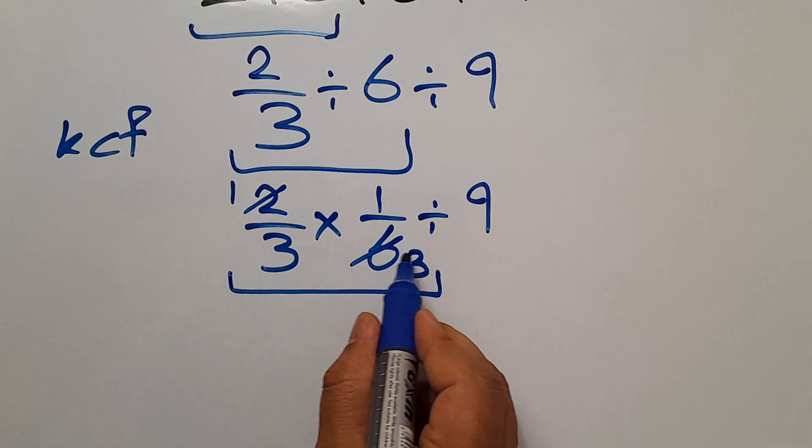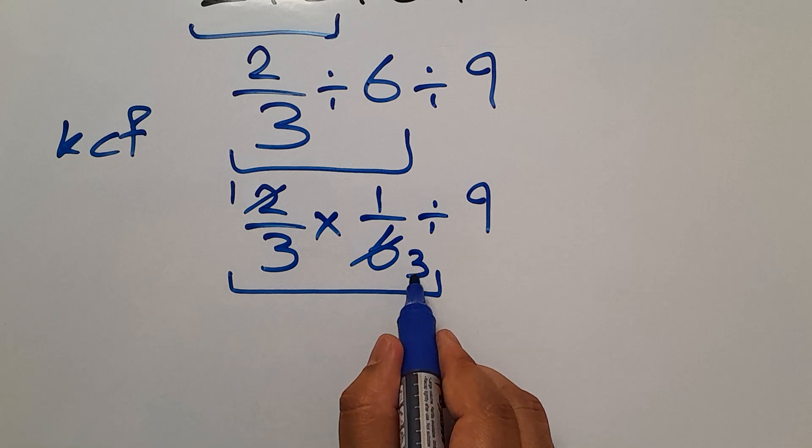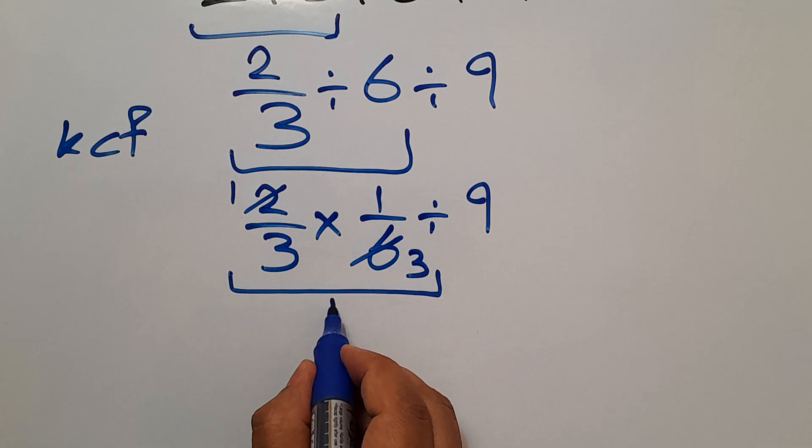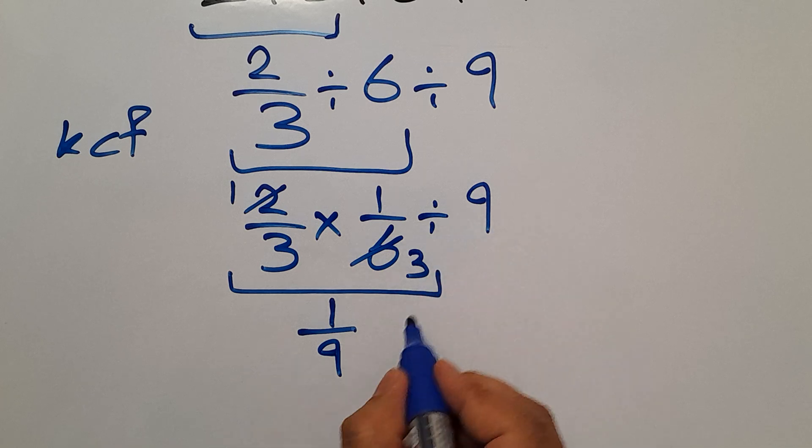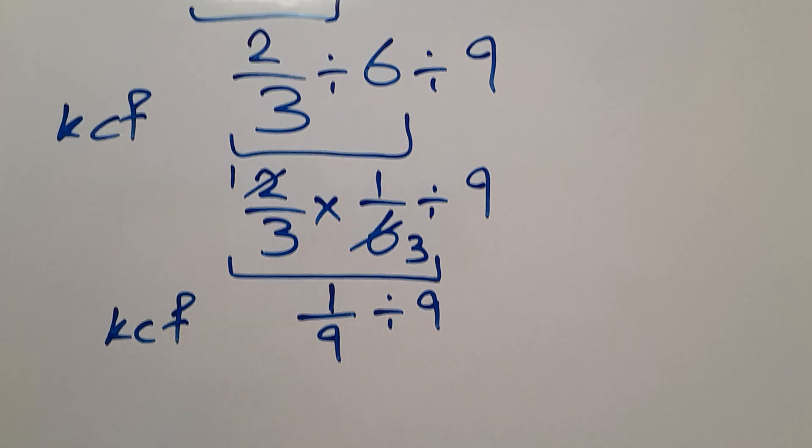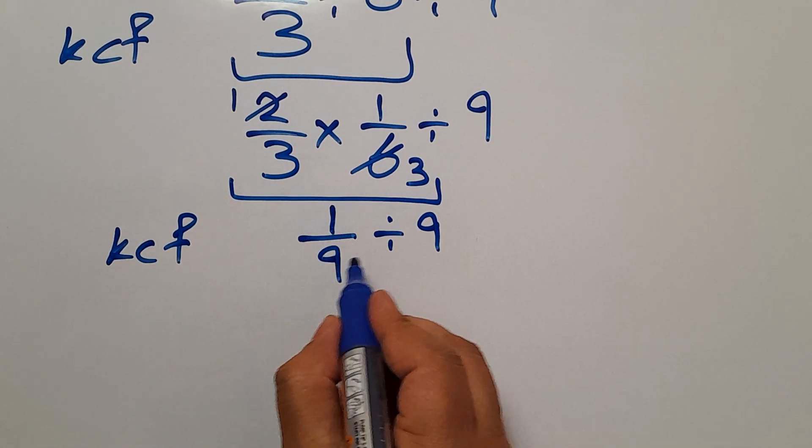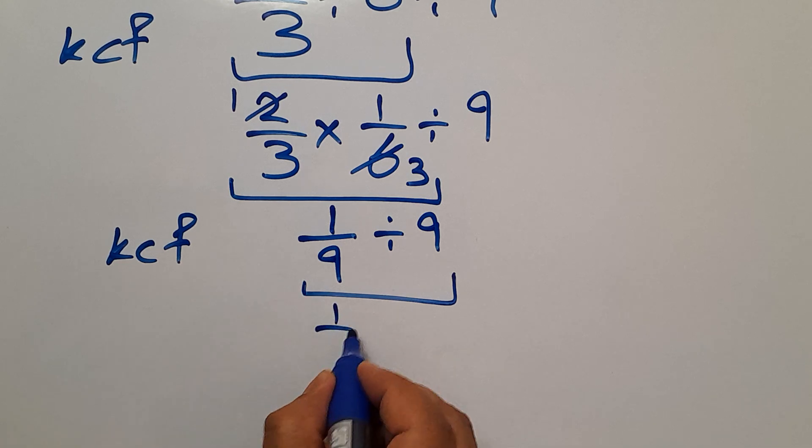So these terms can be equal to 1 over 3 times 3 which is 9, so 1 over 9, then divided by 9. Again according to the KCF rule, 1 over 9 divided by 9 can be written as 1 over 9 times 1 over 9.